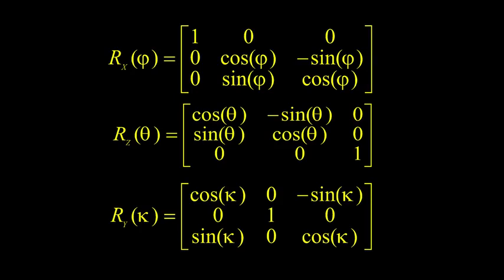This is why we build spacecraft in simulation before we build them for real. Because when it doesn't work in simulation, the engineer says, I don't know, try negative theta. Because knowing which way your angles go is a very difficult thing.